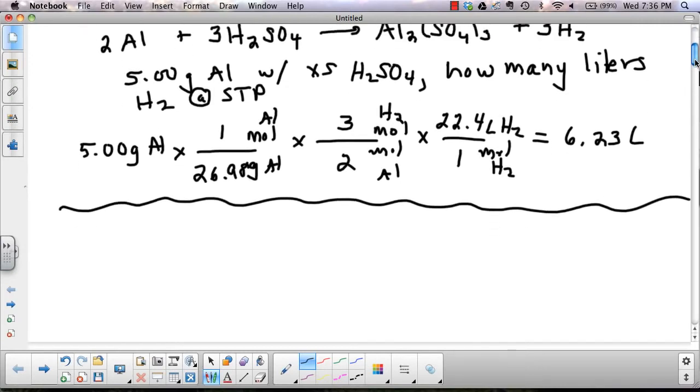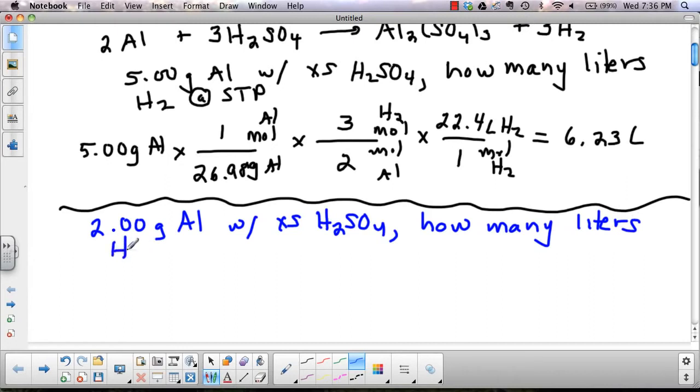Let's use this equation again. Let's try a problem when we're not at STP. So let's say, for instance, that I have 2 grams of aluminum that's going to react with an excess of H2SO4. And this time I want to know how many liters of hydrogen will form at 27 degrees Celsius and 750 millimeters of mercury. And we'll give that 3 sig figs.